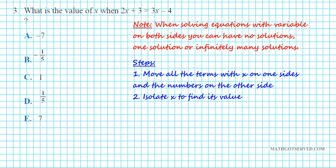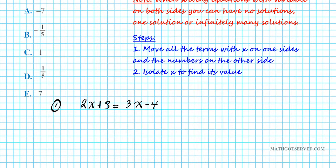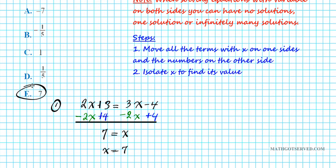We have 2x plus 3 equals 3x minus 4. Since the x on the right has a greater coefficient, we subtract 2x from both sides, and add 4 to both sides. Combining gives us 3 plus 4 equals x, so x equals 7. Our answer is option letter E.